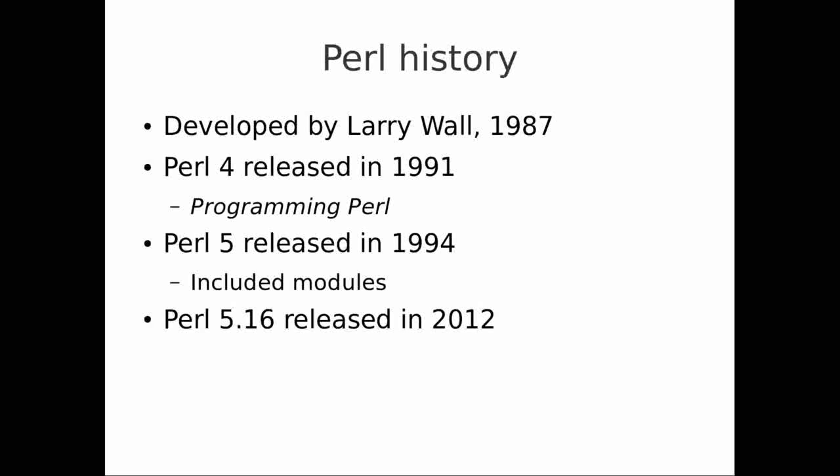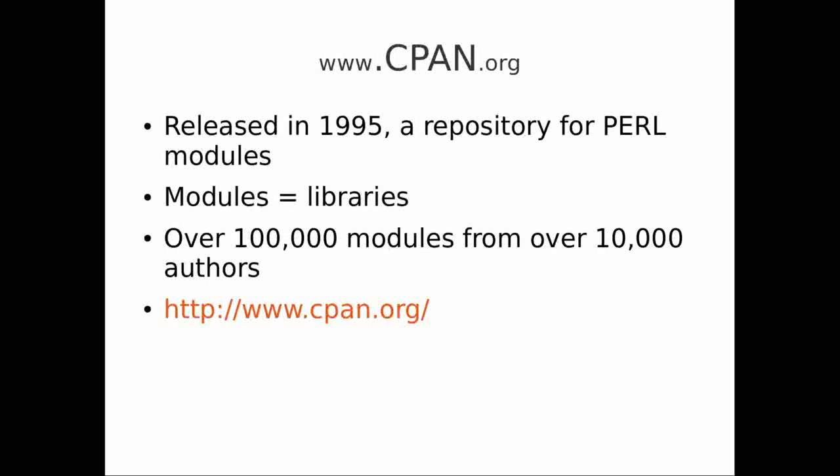Perl 5 development has continued, and Perl 5.16 was just released a year or so ago. One of the things that makes Perl such a strong, important language was the development of CPAN — the Comprehensive Perl Archive Network. This was released in 1995 as a repository for those modules that you could suddenly use with Perl 5. People could write code, share code, and needed a place on the web to put that code so they could share it with others. Nowadays there are more than 100,000 different modules from over 10,000 authors, and at CPAN you can go and search through those modules, finding pretty much anything you want. From the command line it's really easy to download modules, install them onto your system, and include them in your runtime.